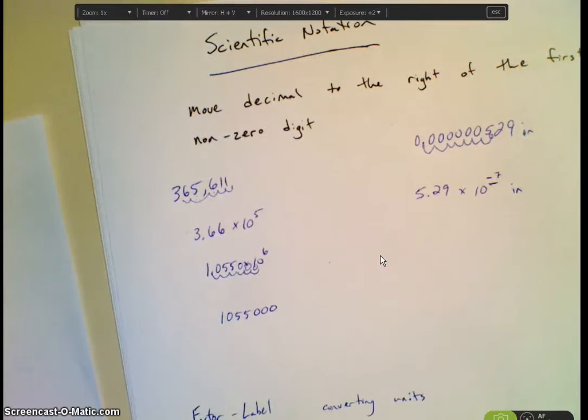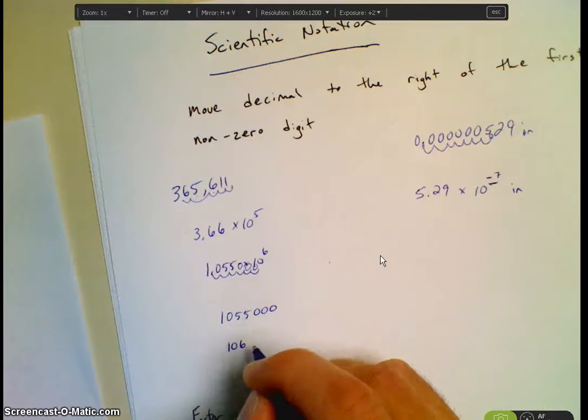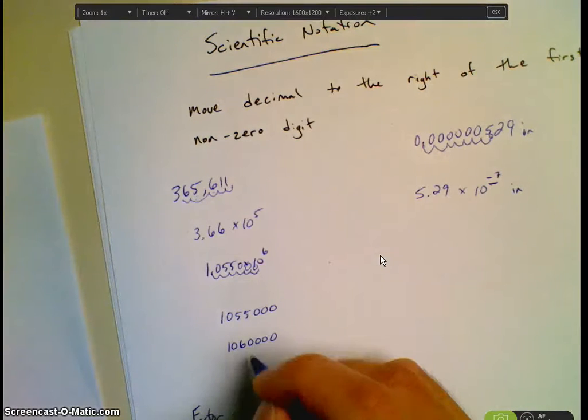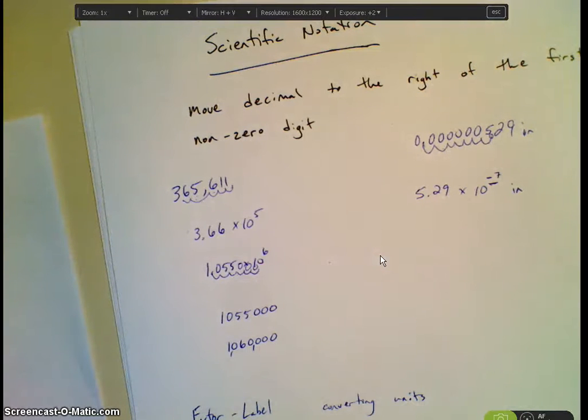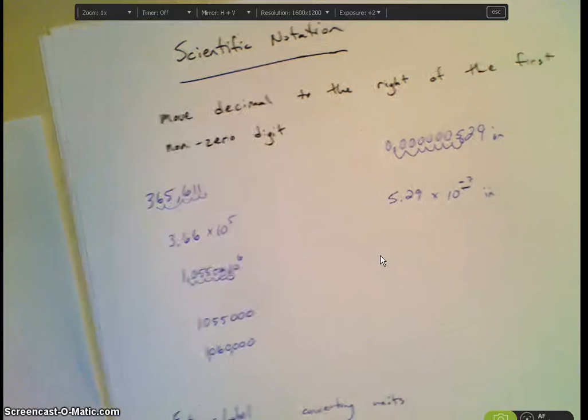However, again, what do the instructions tell us to do? Three significant digits, right? So let's look at our significant digits. Significant or not? Significant. How about the zero? Significant. Five? Yes. So 1, 2, 3. And the five is after that. So we're going to round this to 1, 0, 6, 0, 0, 0, 0. And again, you can put in your commas so you get 1,060,000.